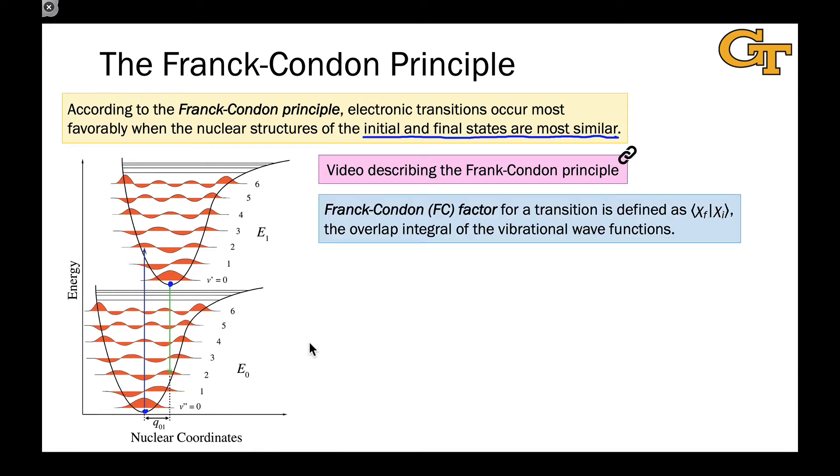I think the most straightforward way for us to proceed is to first note that we can define what's called a Franck-Condon factor, and look at the Franck-Condon factor for a vertical excitation to get an idea of how allowed or how favorable the transition is. Franck-Condon factor is the overlap of the vibrational wave functions in the initial and final states.